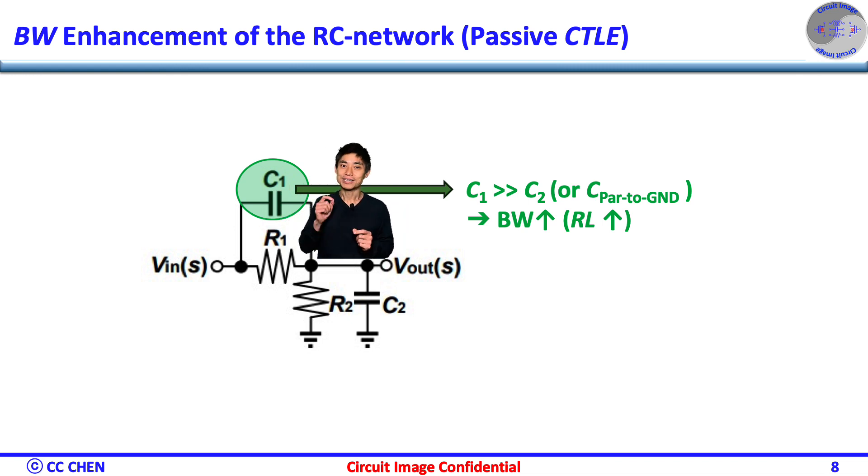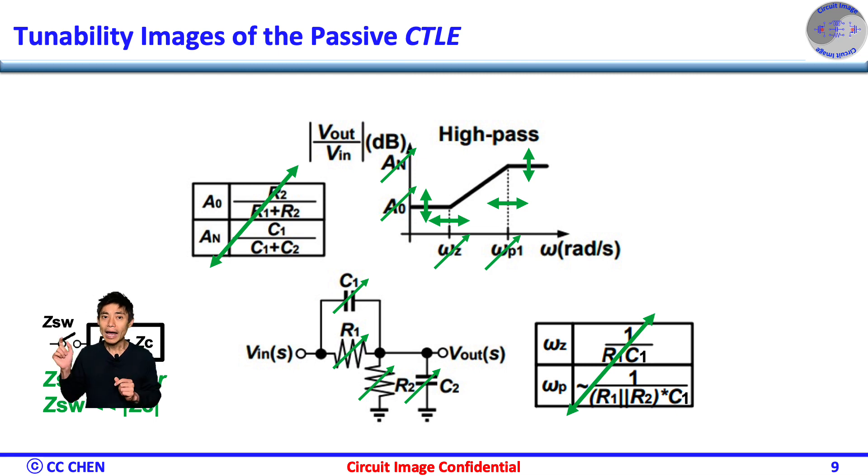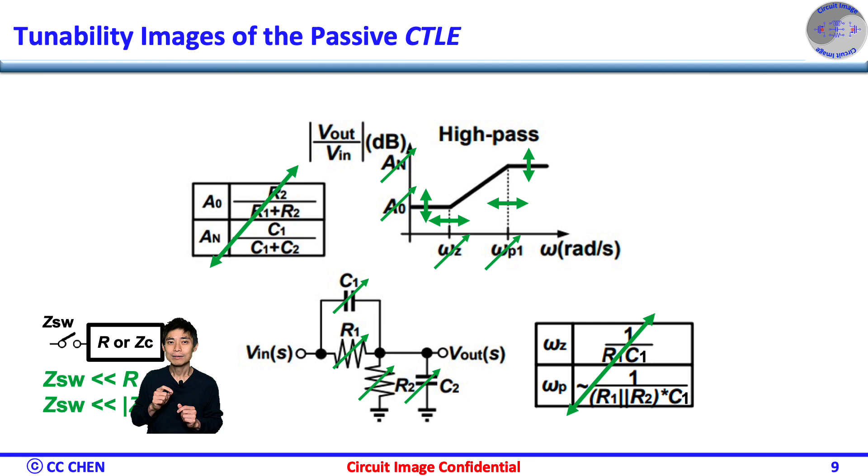But to the accuracy of the equation of the passive CTLE, what is programmability advantage? Think about the switch images for 5 seconds. Yes, as we discussed in the active CTLE video, the CTLE tunability for a different channel loss profile is a must to accommodate different media in any link. To adjust or tune the R1, R2, C1 and C2 values, we may just need to add switch in series with those passive elements. As long as those switches impedance was small enough compared to those passive elements, the linearity of the RC network is still good enough.